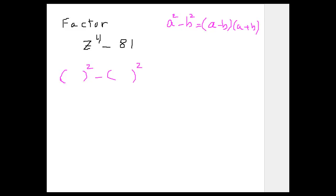Well, I can. Here the first term would be z² to the power of 2, and that would be 9. So your first term, your a here, is z², and your b is 9.